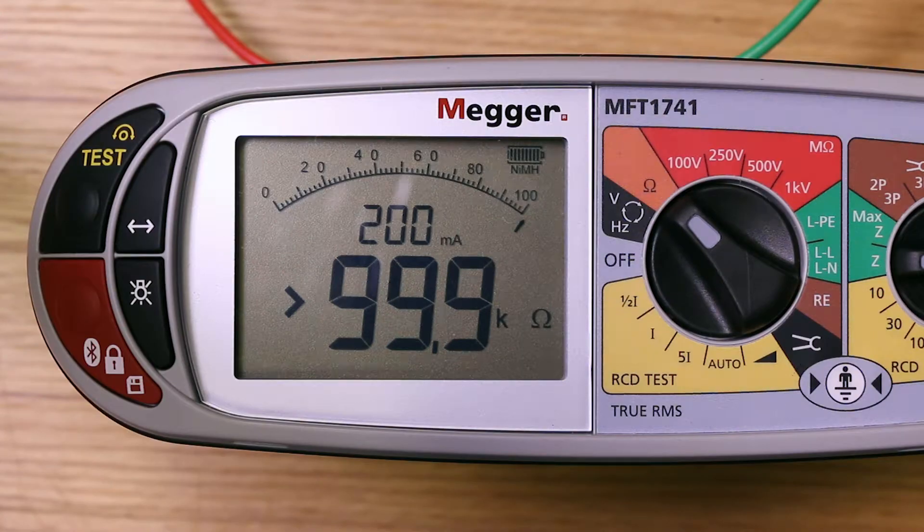When selecting continuity measurement, the first thing that we need to do is null the resistance of the lead set being used.